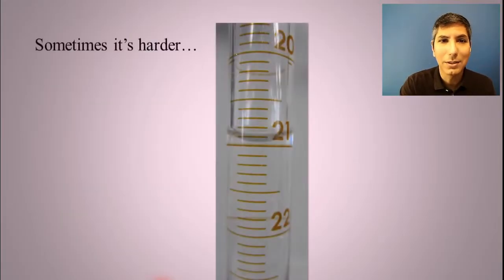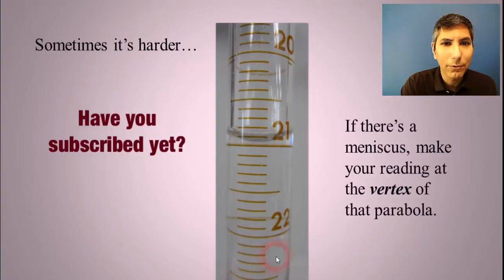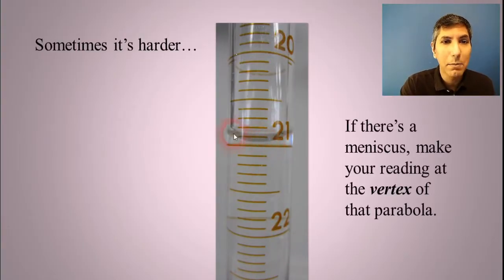However, sometimes it's harder. You may not have a digital readout all the time. You may have something like this burette where you have to estimate. In this case, we have a meniscus. And so in this case, since it curves downward, we read at the bottom of that meniscus.